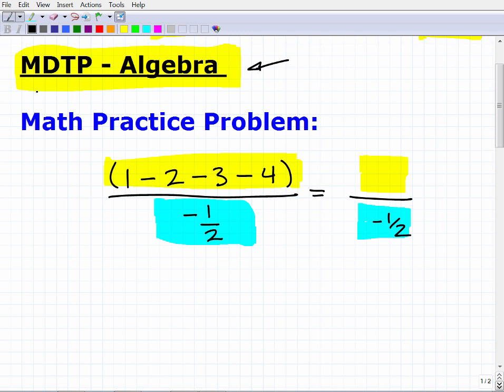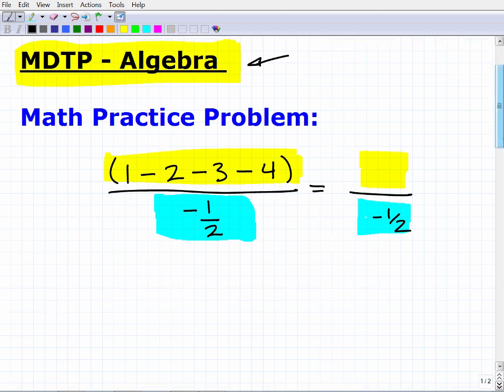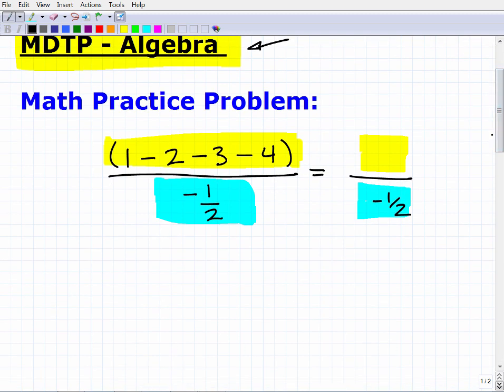I'm gonna go ahead and start solving the problem. First of all, there's nothing to do in the denominator, so we just have this negative one-half. I got to figure out what's going on in the numerator. What we have here - you got to be very careful, these are negative numbers - so this is really 1 plus negative 2, plus a negative 3, plus a negative 4.